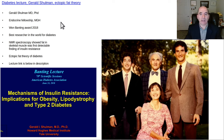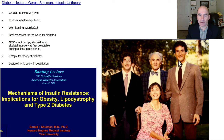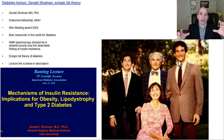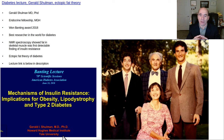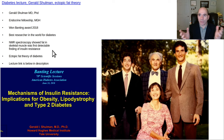This lecture is a diabetes lecture by Gerald Shulman about the ectopic fat theory. He's MD, PhD, and did his fellowship in endocrinology at Massachusetts General Hospital. He became most famous for his work at Yale University, working with nuclear magnetic resonance spectroscopy. He confirmed that the earliest detectable finding of diabetes is the accumulation of fat within the skeletal muscle — that's actually a big deal.